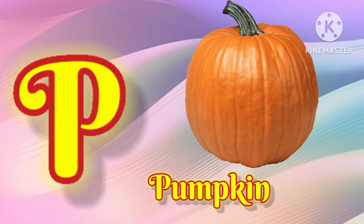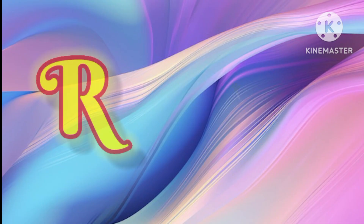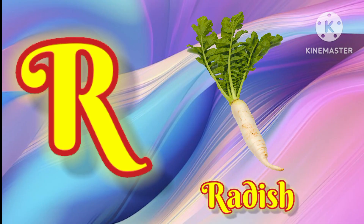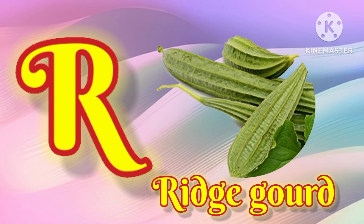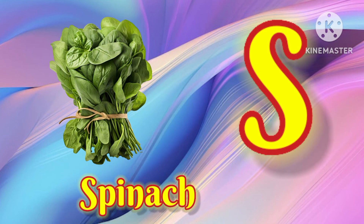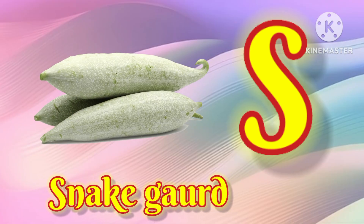P for Pumpkin. R for Radish. R for Ridge Gourd. S for Spinach. S for Snake Gourd.